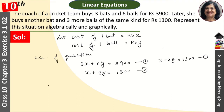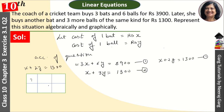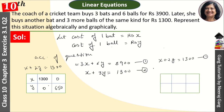For the first equation, we simplify 3x + 6y = 3900 to x + 2y = 1300. We need to find at least two points. When y = 0, x = 1300. When x = 0, y = 650. So the two points for the first equation are (1300, 0) and (0, 650).